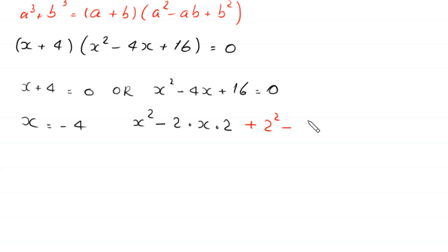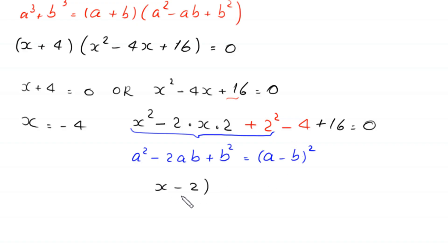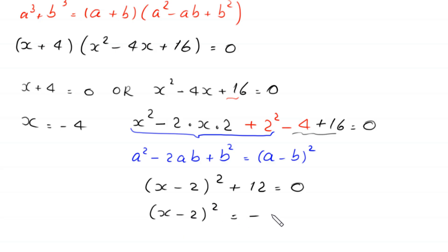To balance that, we subtract 4, and the plus 16 remains. So we have x² − 2(x)(2) + 2² − 4 + 16 = 0. Using the identity a² − 2ab + b² = (a − b)², this becomes (x − 2)² plus 12 equals 0. Moving 12 to the right-hand side gives (x − 2)² = −12.